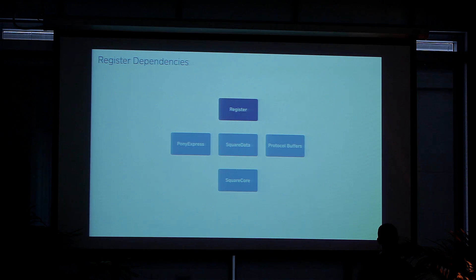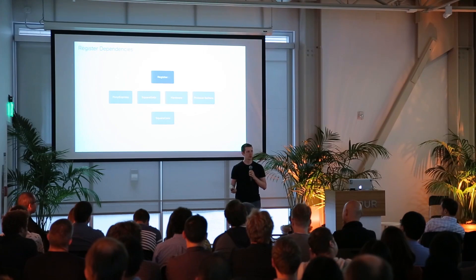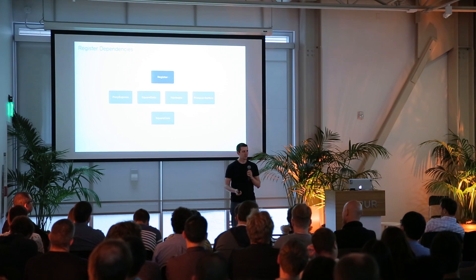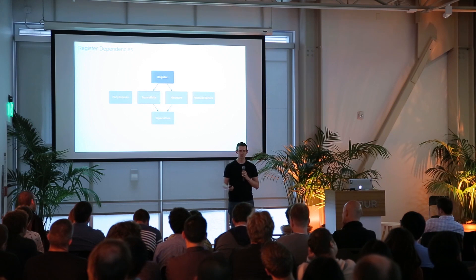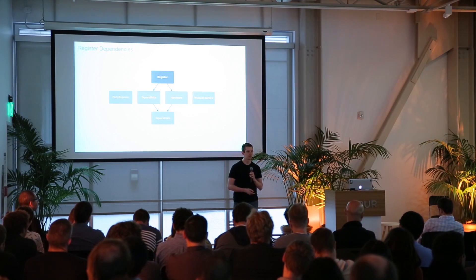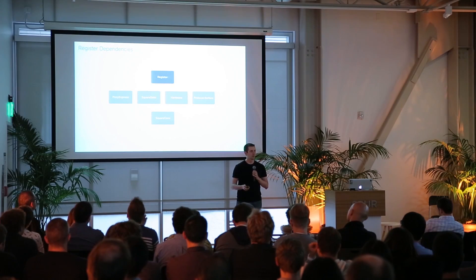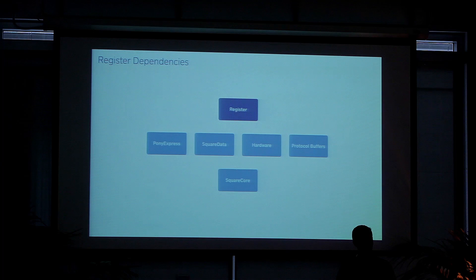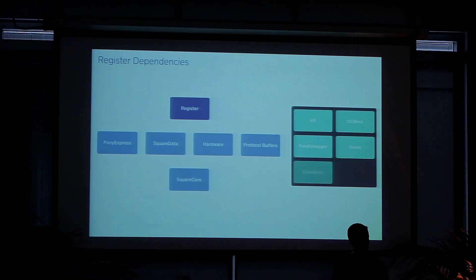But it does get complicated as we add more things. Here I've added the hardware library — we have this library because Square Register interacts with multiple peripherals: barcode scanners, cash drawers, etc. Adding this library would be fine, except that we can have a conflict: both Square Data and the hardware library depend on Square Core. And if they depend on different versions of Square Core, if the libraries are built in isolation not keeping track of what Register will actually use, there can be conflicts. This also just assumes one build configuration, which isn't realistic. Every one of these — this app and every one of its libraries — has test targets with their own dependencies like KIF and OCMock. And for day-to-day development, we have more dependencies like Pony Debugger and Reveal. And then finally, when we're preparing for release, we have more dependencies like Crashlytics.